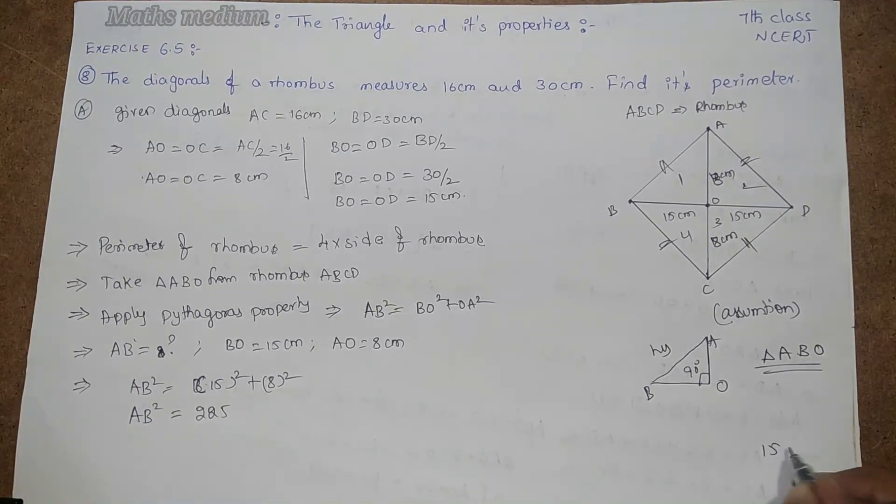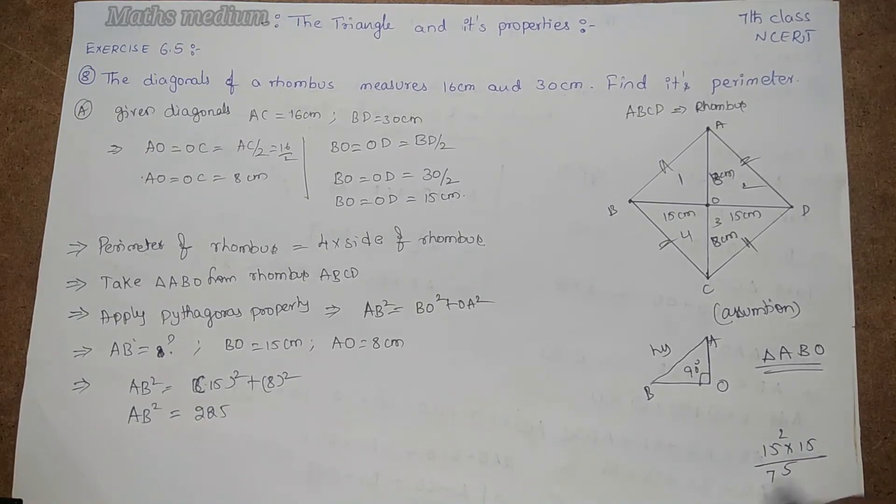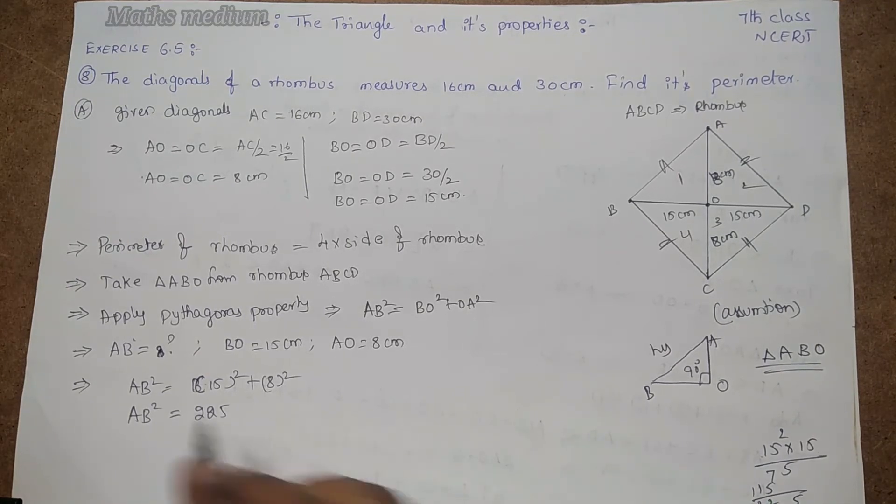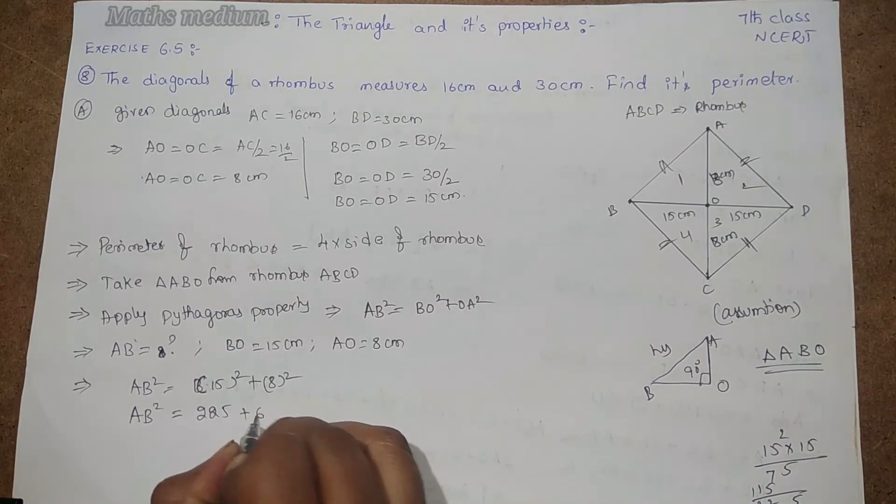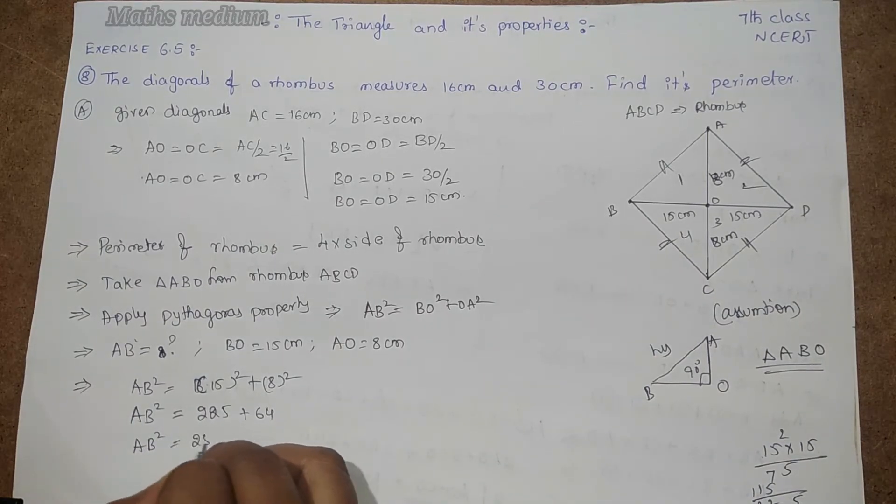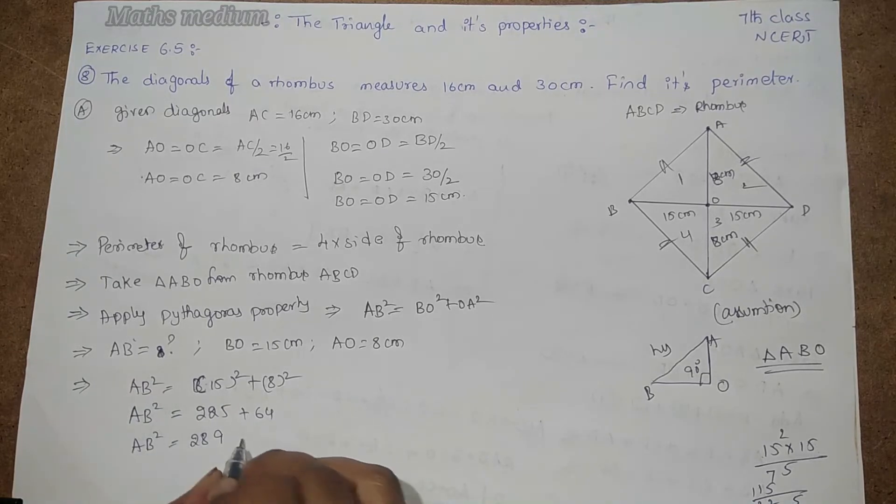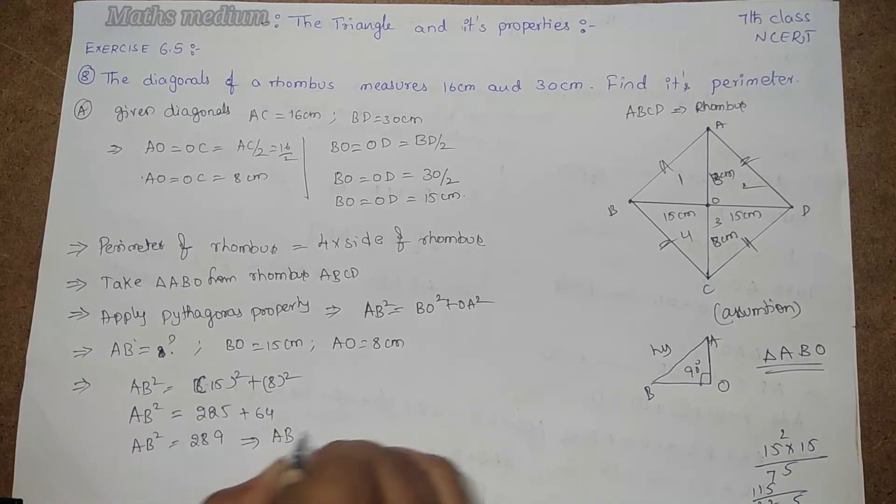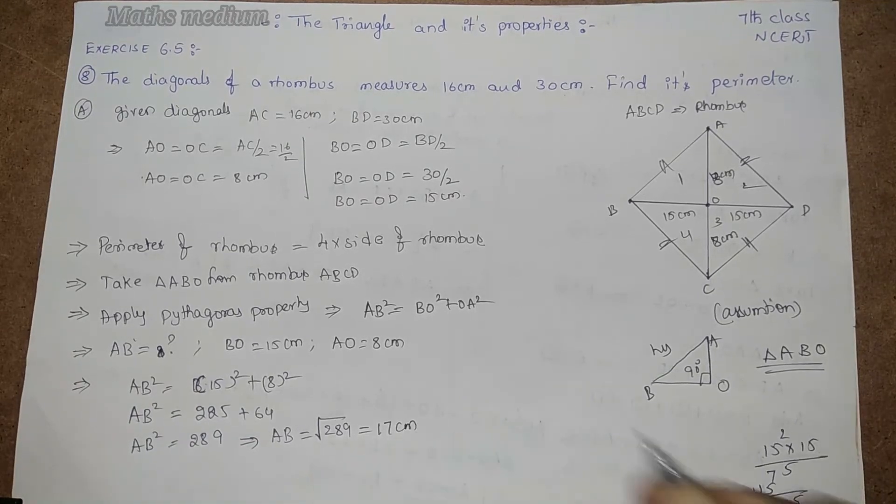AB² equals 15 square, which is 225, plus 8 square, which is 64. AB² equals 289. AB equals root of 289, that is equal to 17 cm.